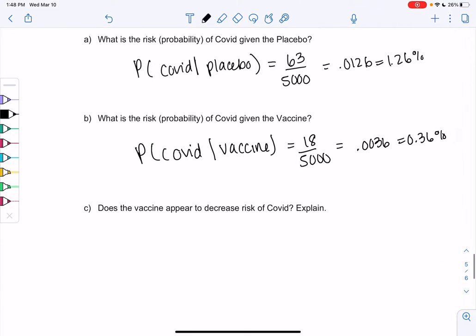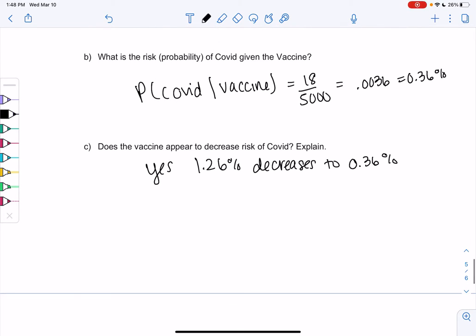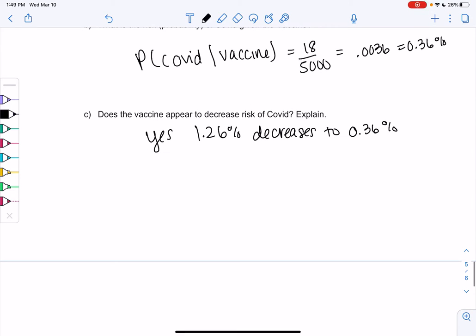So does it appear that the vaccine decreases the risk? Yeah, because it's smaller. So 1.26% decreases to only 0.36%. And this is going to lead into what efficacy is. So efficacy doesn't mean like 72% don't get COVID. I mean, maybe that's what it kind of sounds like, but it's a little bit different. It's measuring the risk and how much the risk changes. So we're going to compare the risk with the vaccine and the risk without the vaccine.